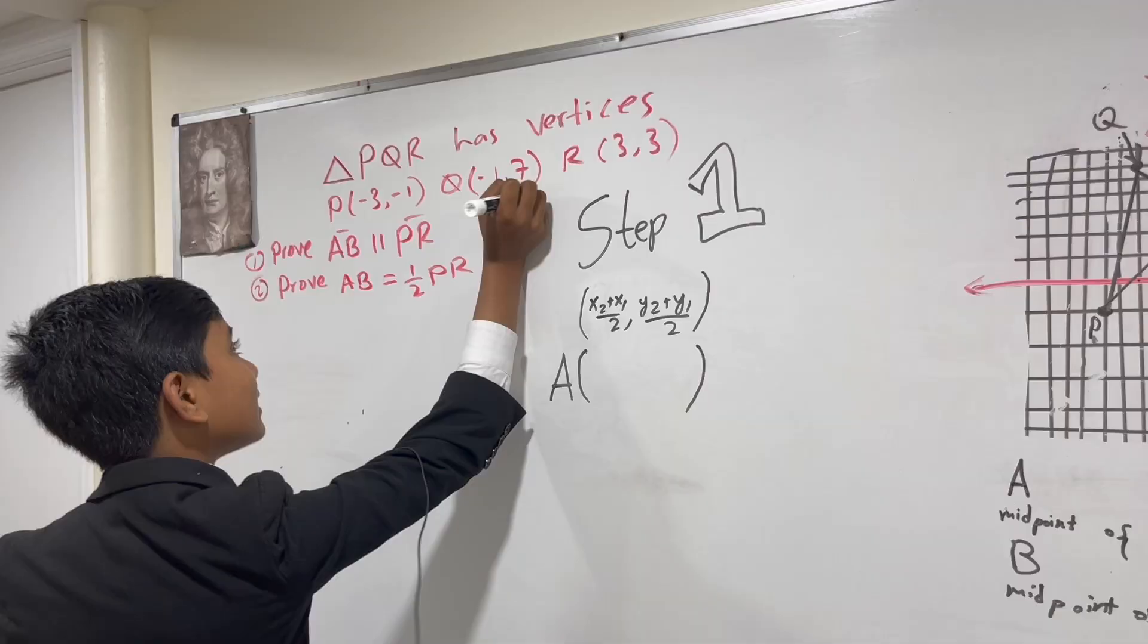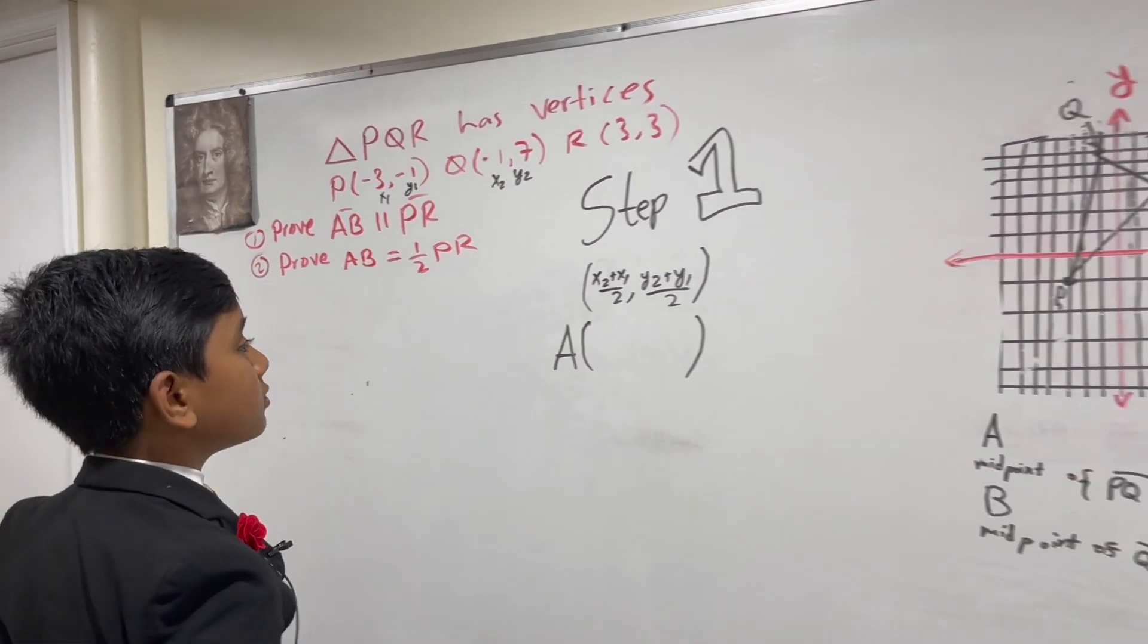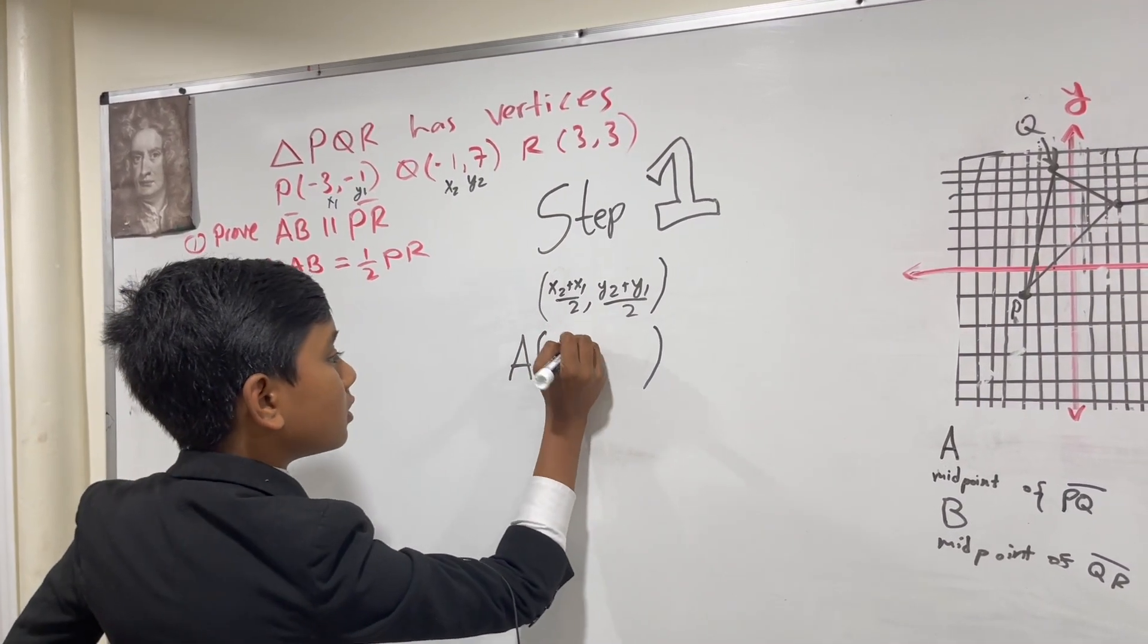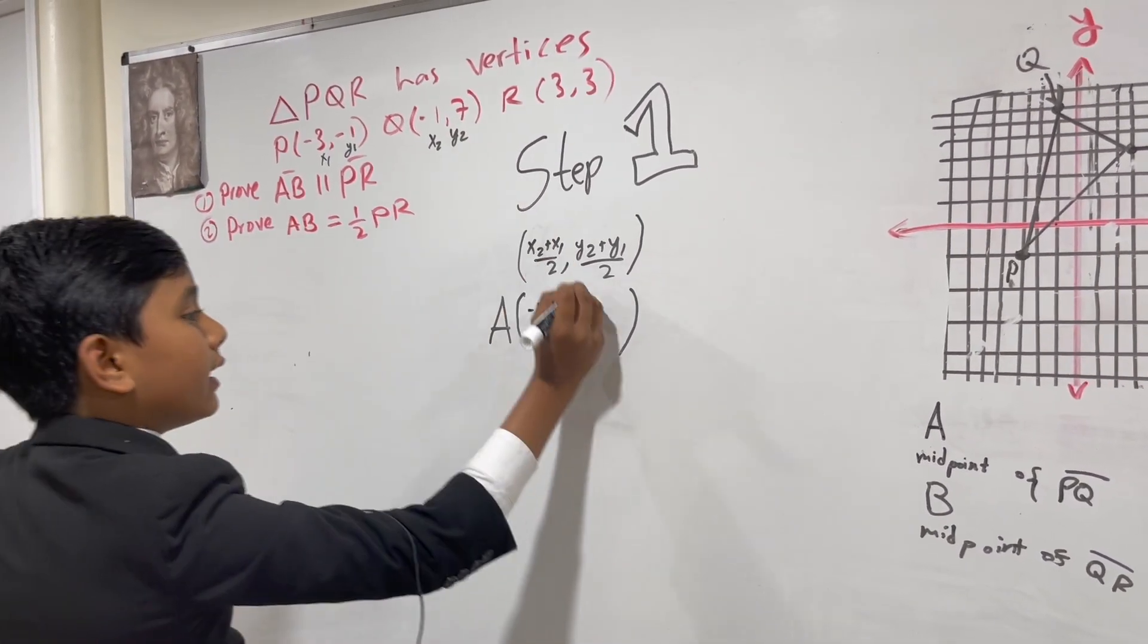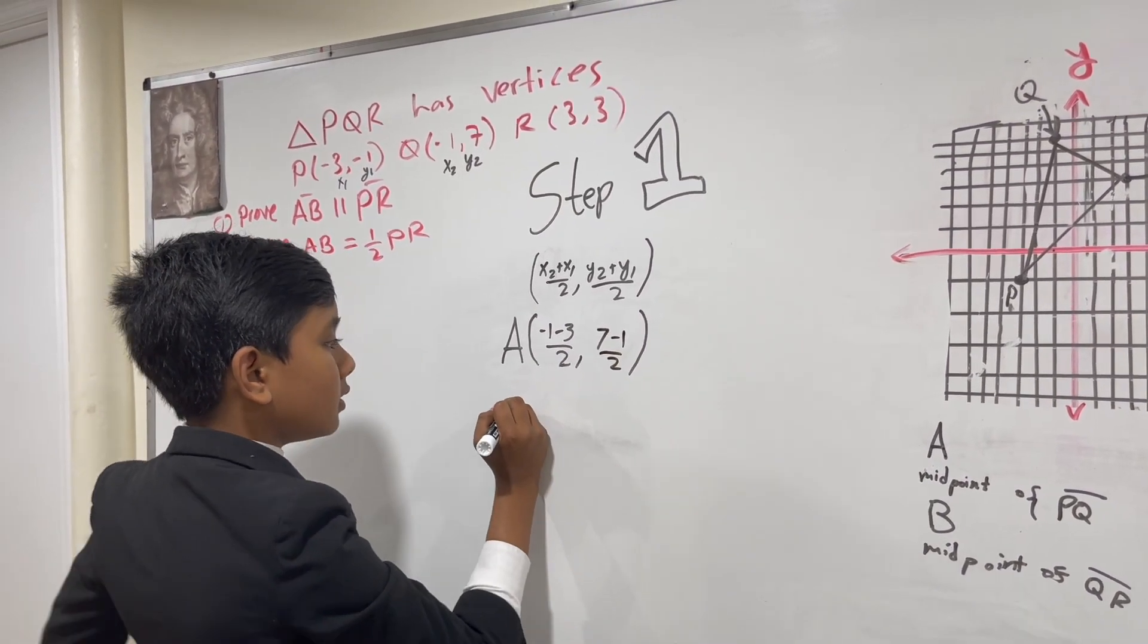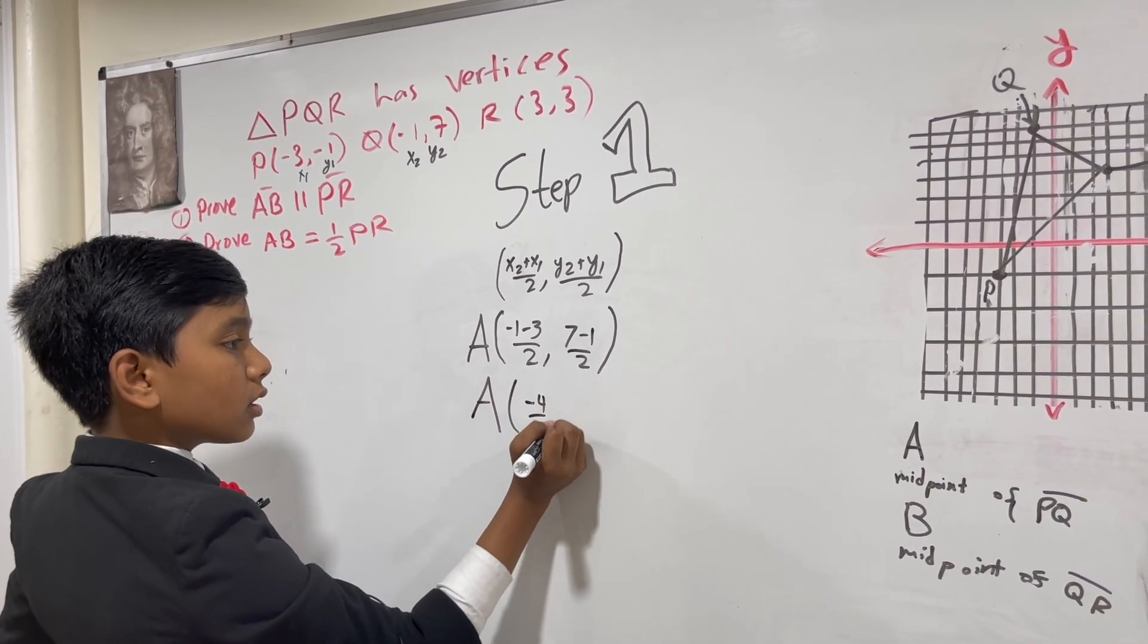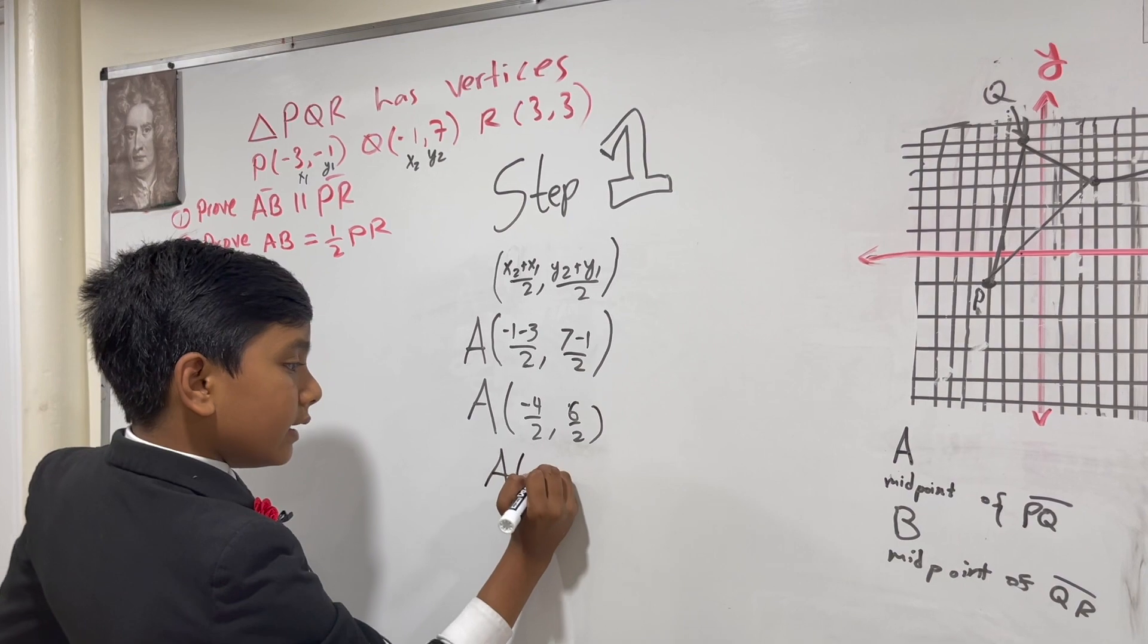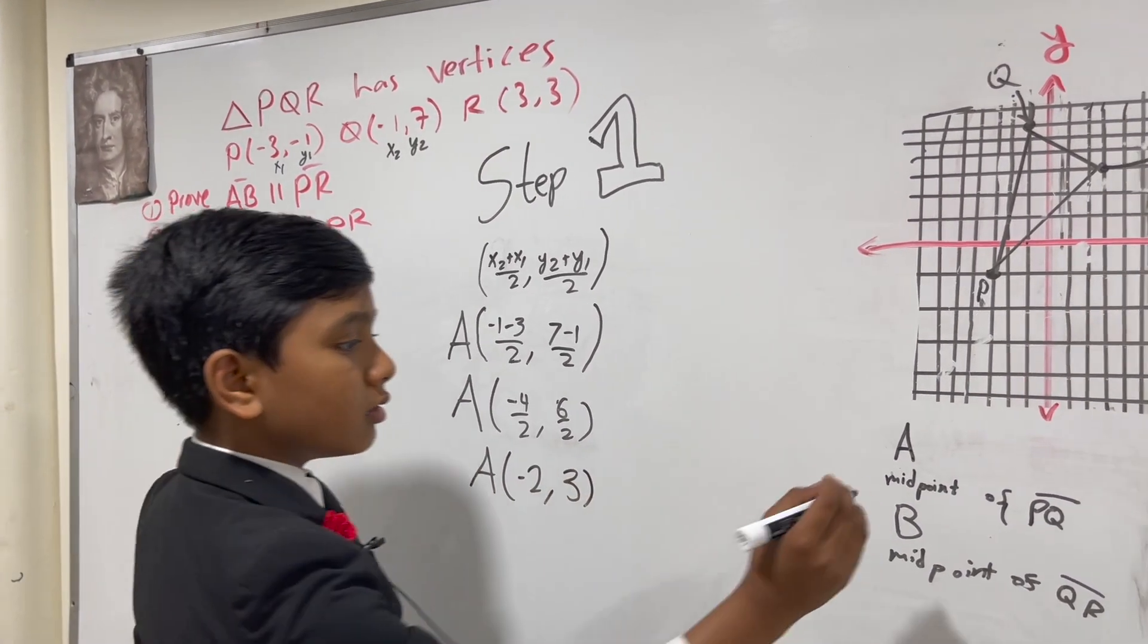So X2 is negative 1 and X1 is negative 3. A is negative 4 over 2 comma 6 over 2, which gives us negative 2 comma 3. So now we know these coordinates.